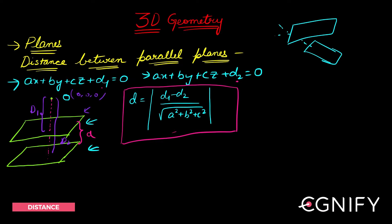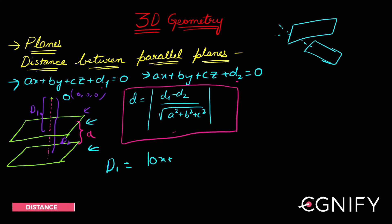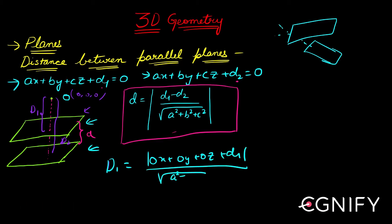Capital D1 is the distance of the origin from this plane. Using the distance of a point from a plane formula, you put the origin into the equation of the plane: mod of (0·a + 0·b + 0·c + d1) divided by √(a² + b² + c²). This simplifies to d1 divided by √(a² + b² + c²).